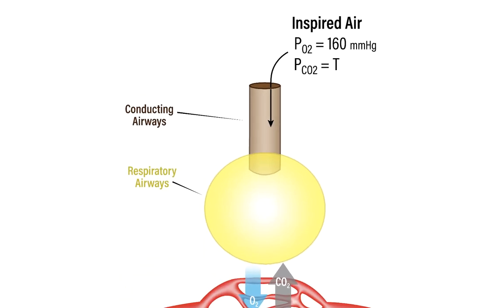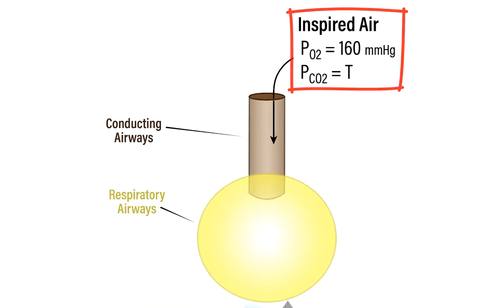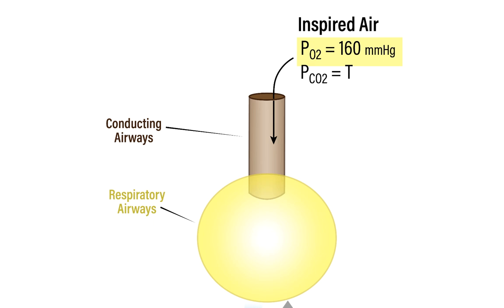Beginning with the inspired air, which is typically atmospheric air at sea level, the barometric pressure is 760 millimeters of mercury. Because atmospheric air is 21% oxygen, the partial pressure of oxygen is approximately 160 millimeters of mercury. Although there is carbon dioxide in the atmosphere, the amount is insignificant for mammals — certainly not insignificant if you're a plant or a coral — so there are only trace amounts of carbon dioxide.